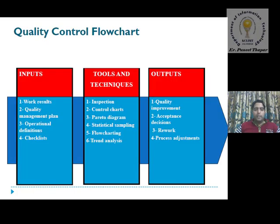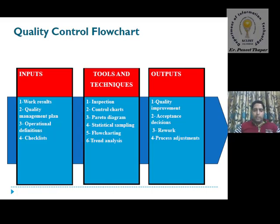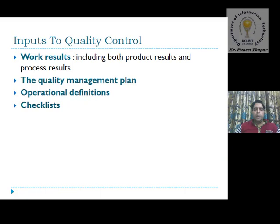Let's discuss the quality control flow chart, which has three parameters: inputs, tools and techniques, and output. For inputs we will discuss work results, quality management plans, operational definitions, and checklists. For tools and techniques we will discuss inspections, control charts, Pareto diagrams, statistical sampling, flow charting, and trend analysis. Outputs include quality improvements, acceptance decisions, and rework process adjustments.